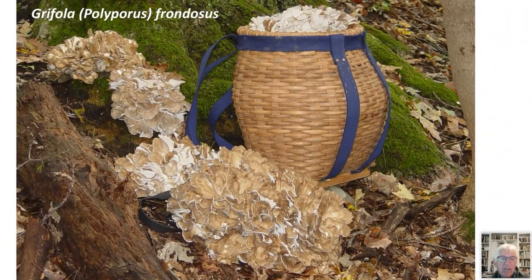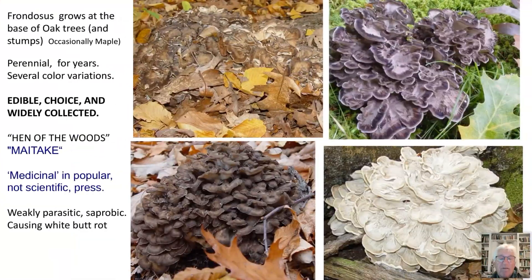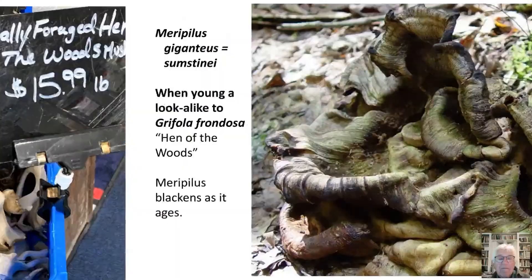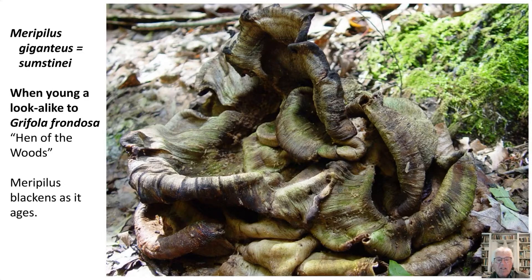So it's often called maitake, or hen of the woods — most of you know that. Here's one tree where there were four specimens — there must be two more in that basket — all from this one tree. That's the kind of edible mushroom you want to find. The only thing that resembles it is Meripilus sumstinei, or Giganteus, which grows in spring. It looks very much like the hen of the woods when young, but as it gets older it turns black. It's edible but tough and bitter, and it blackens as it ages. You can find it on lots of different trees.